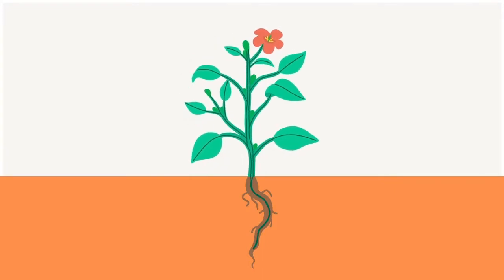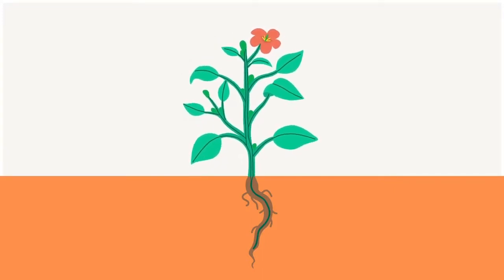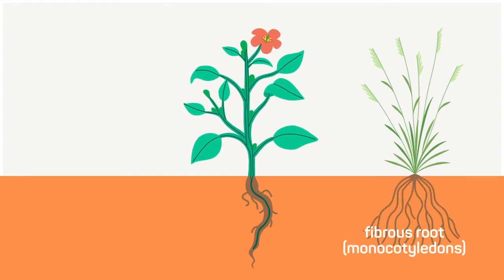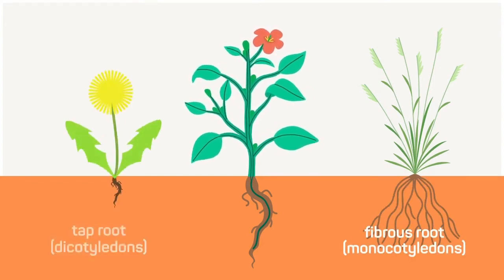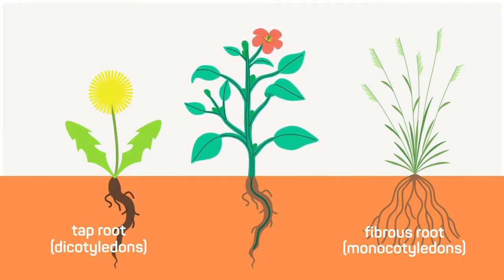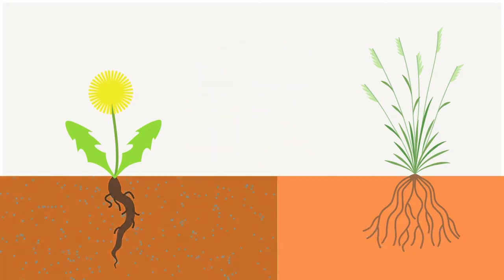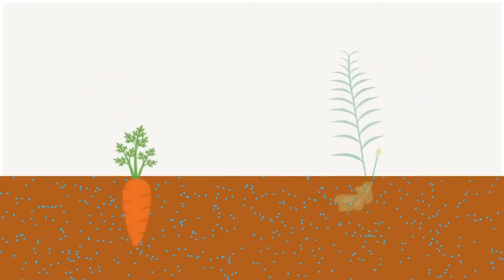The shape of this root system can vary. It may be fibrous, as in monocotyledons, or there may be one central tap root, as in dicotyledons. It will also depend on the habitat of the plant and the availability of water. Carrots and ginger, for example, are plant roots that we eat.